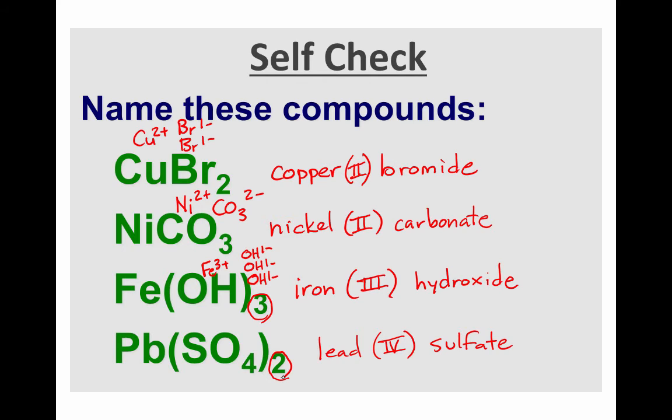Let me show you how this one works. The two sulfate ions each have a charge of two minus. This tells me that the total negative charge is four minus. So I figured that the lead ion must have a charge of four plus. And so I called it lead four sulfate.